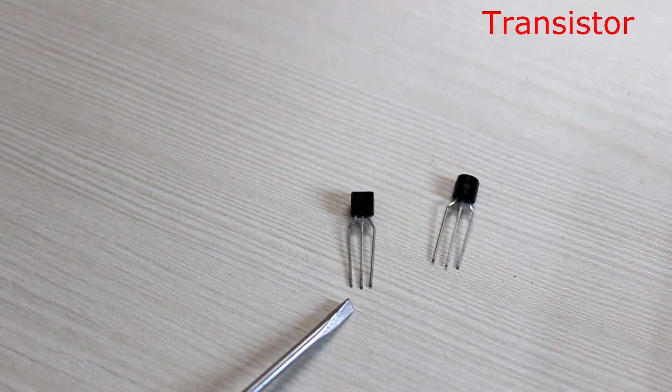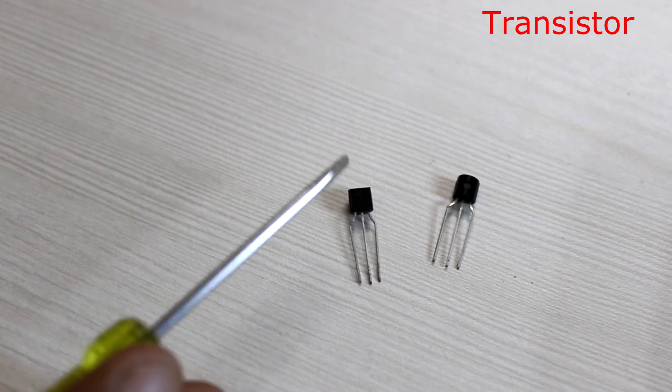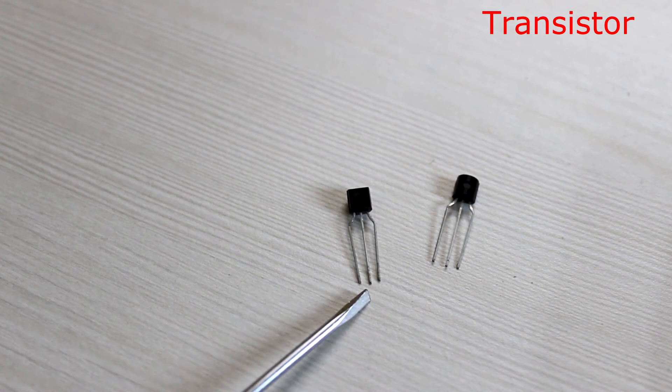This is a 2N3904 NPN silicon transistor. If you look at it from the flat side the terminals would be emitter, base and collector.